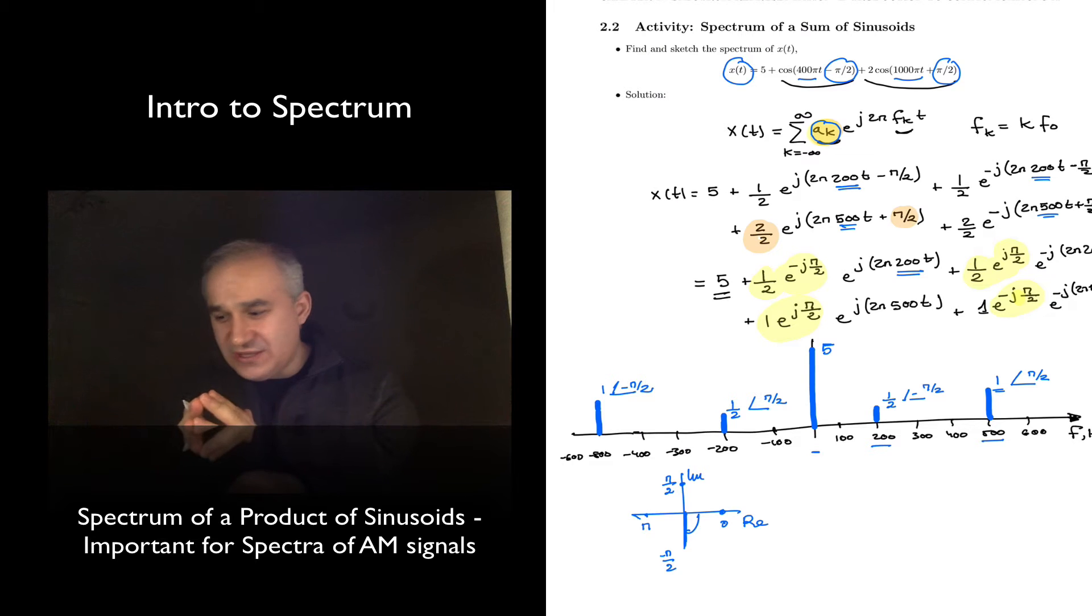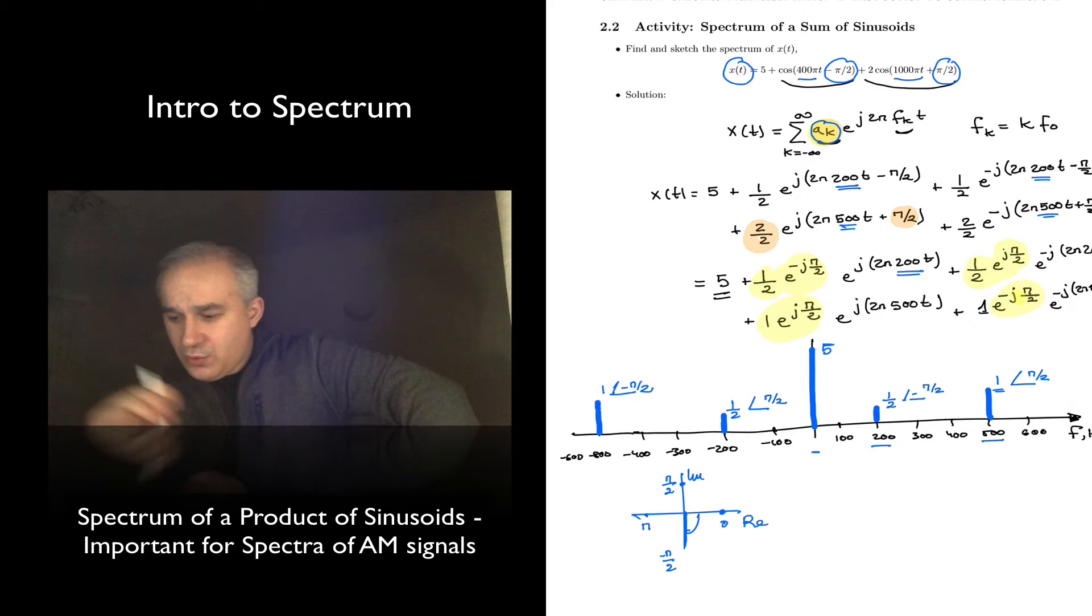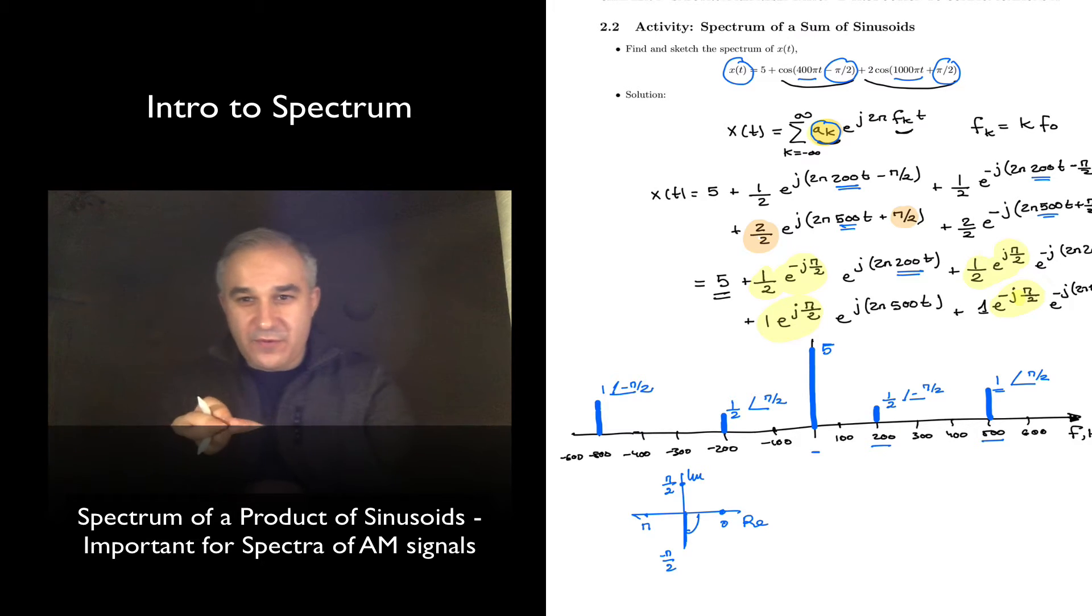Hello. So in the previous activity, in the previous video, we saw how we could use the inverse Euler formula to compute the spectrum for a sum of sinusoids without having to resort to the Fourier series integral.